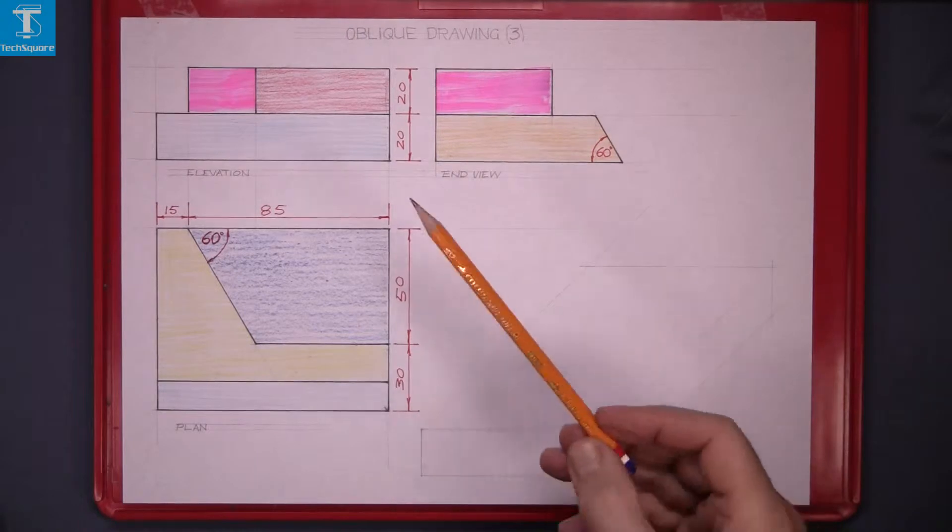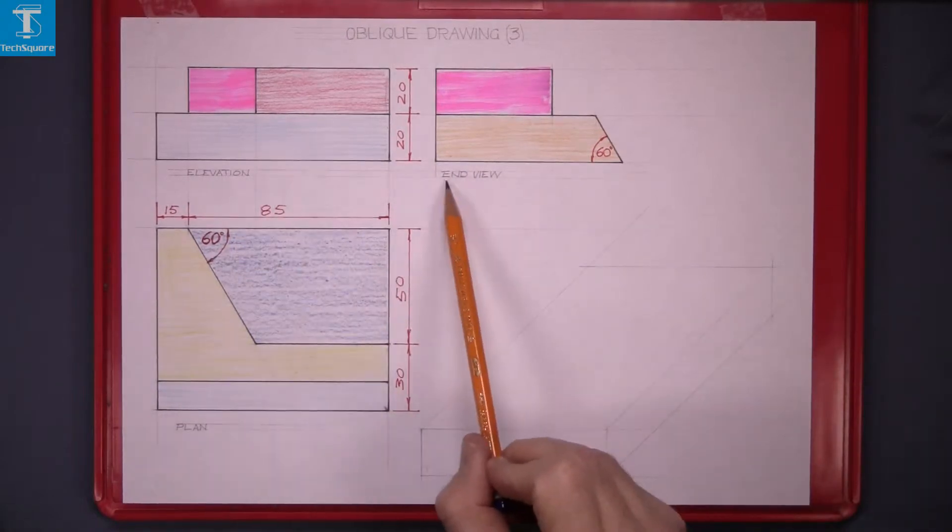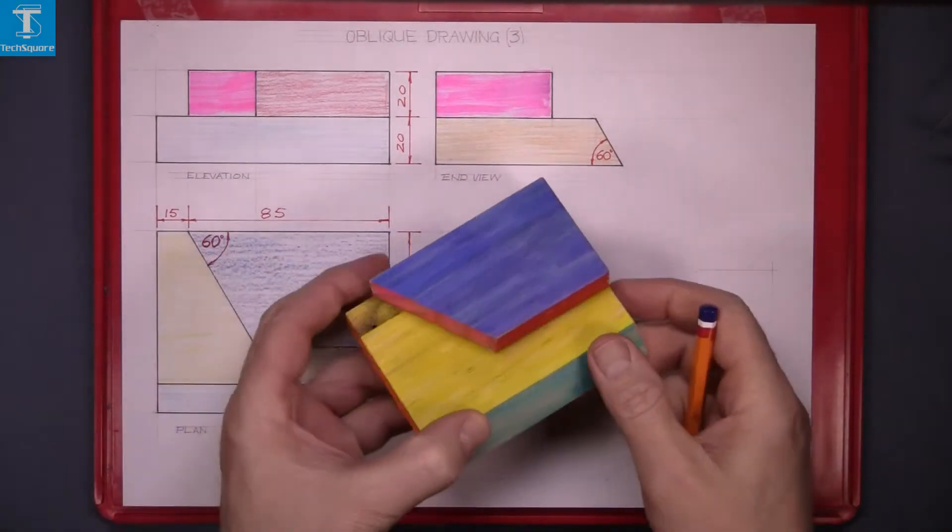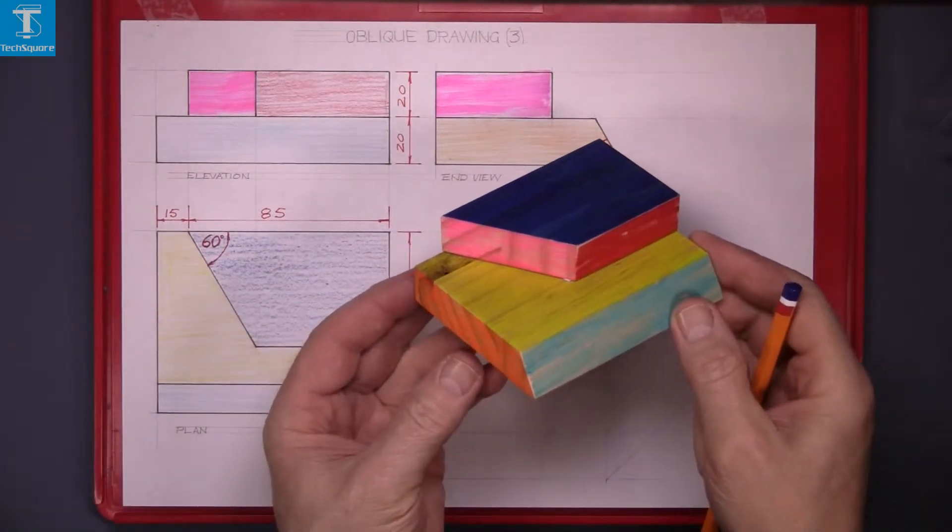Oblique drawing 3. Given the elevation, the end and the plan of this solid which is made up of two pieces of timber.